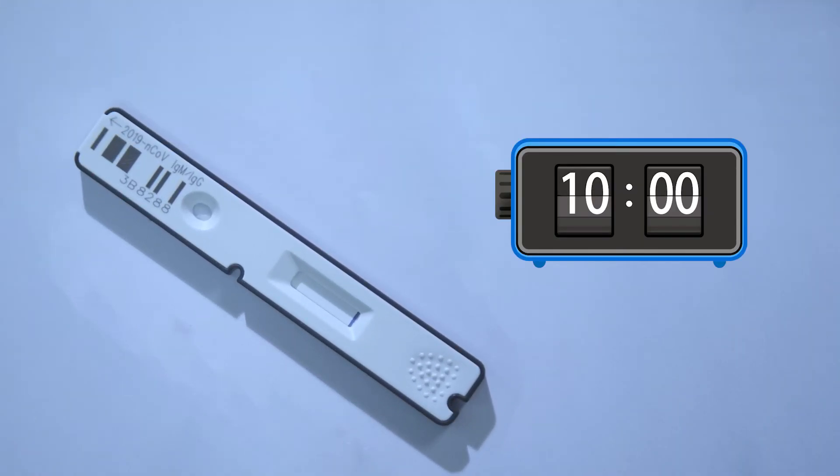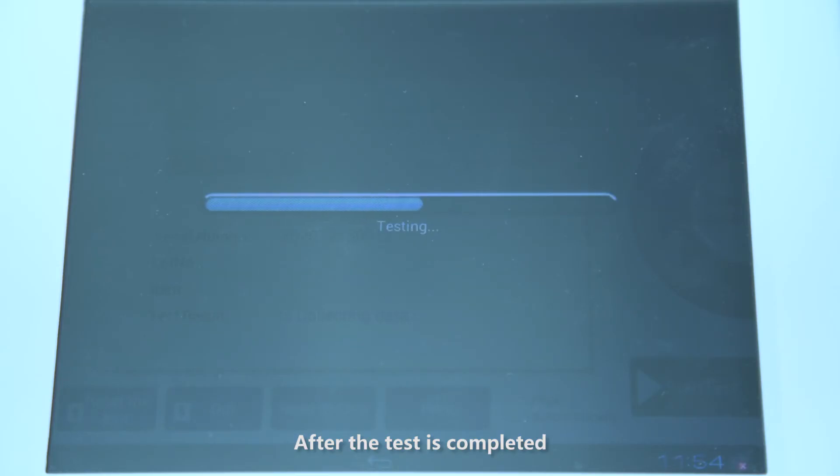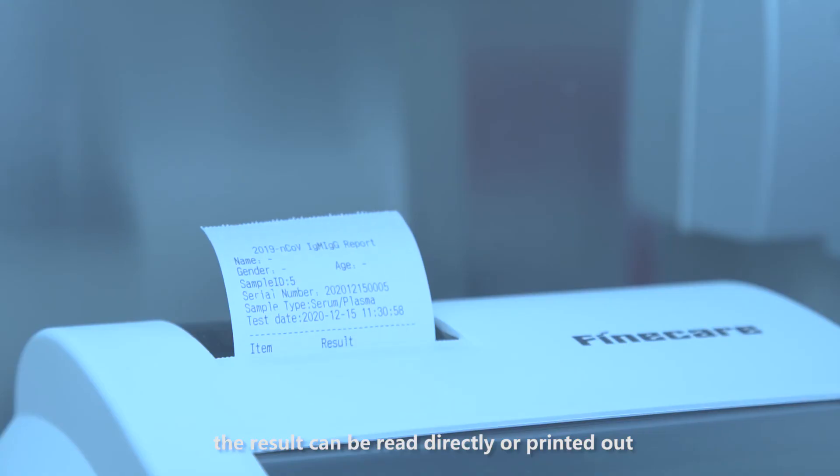After 10 minutes incubation, insert the test cassette into the device tray. Press start to run the test. After the test is completed, the result can be read directly or printed out.